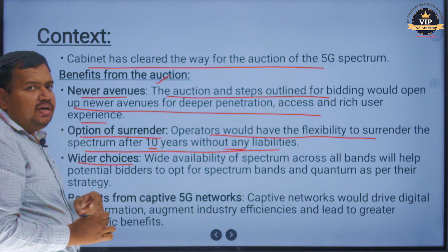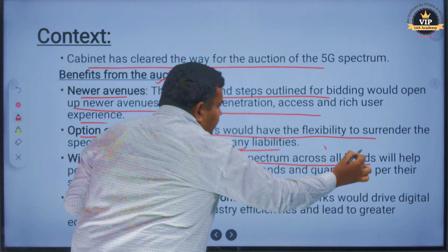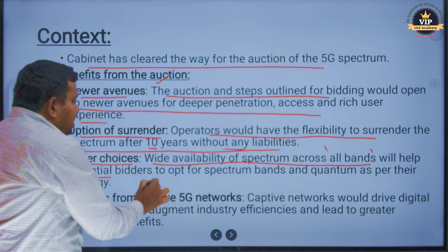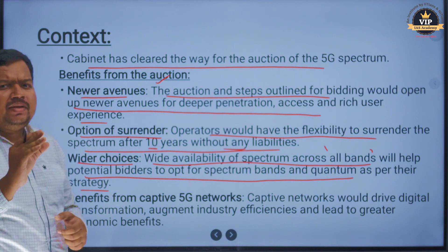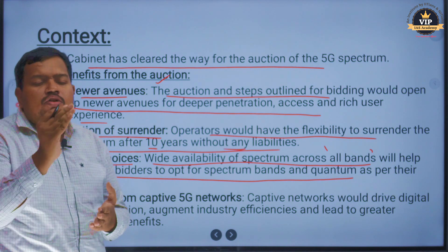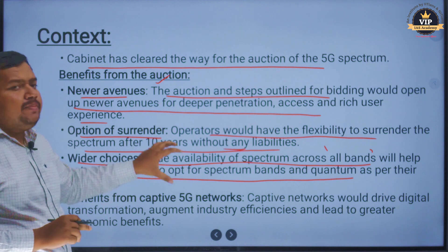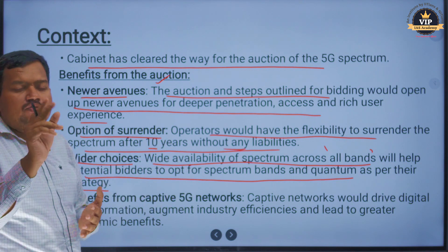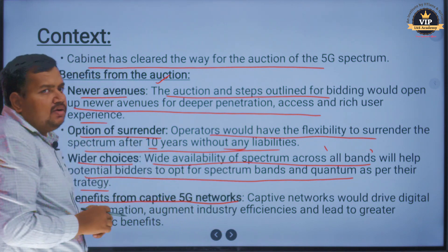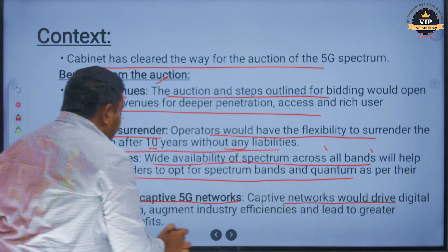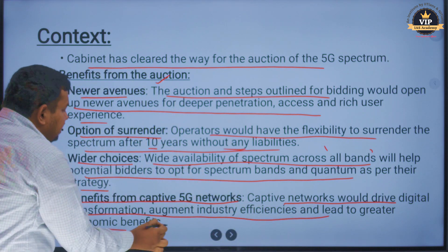The next benefit is wider choices. Wide availability of spectrum across all bands will help potential bidders to opt for spectrum bands and quantum as per their strategy. Each company will have a strategy, and the auction will be structured around the world's strategy across all bands.